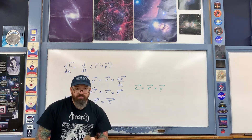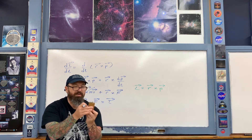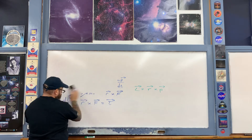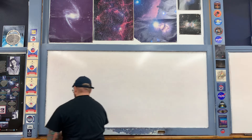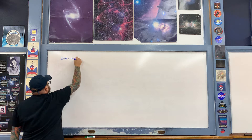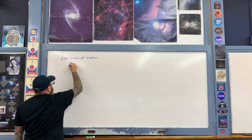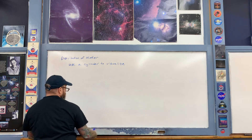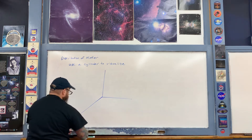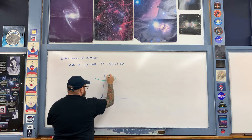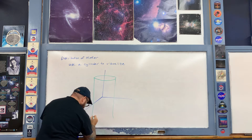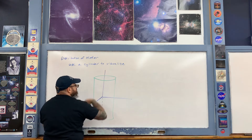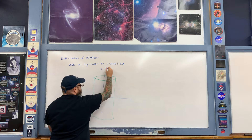Now let's get to the cylinder situation — how do you go from the cross product r cross p to ultimately describing an I omega associated with this distribution of matter? I'll use a cylinder to visualize. Drawing it in a three-dimensional coordinate system, I'll place the cylinder along the z-axis, going down in the negative z direction, with the z-axis as the axis of rotation — so it's rotating like this on the diagram.